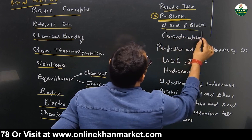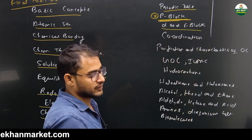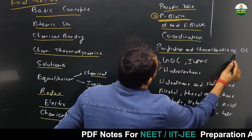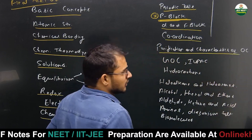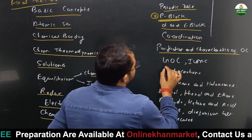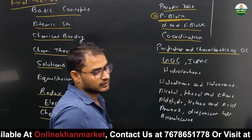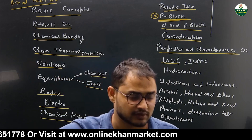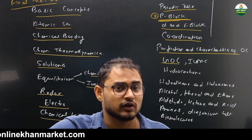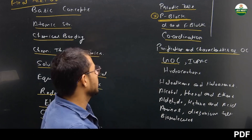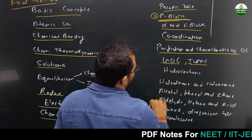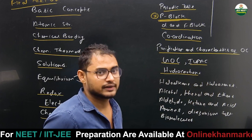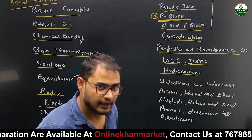Then D and F-block — including KMnO₄ and K₂Cr₂O₇ — will be in your syllabus. Then Coordination Compounds — covering VBT and CFT — and purification methods like crystallization are included. GOC (General Organic Chemistry) covers inductive effect, hyperconjugation, resonance, electromeric effect, and other electronic displacement effects, plus IUPAC nomenclature. Hydrocarbons — alkanes, alkenes, alkynes, and aromatic hydrocarbons — are all there.